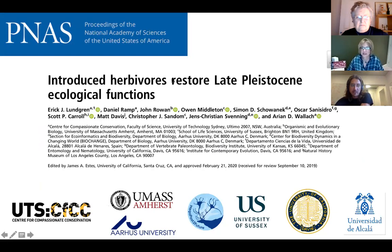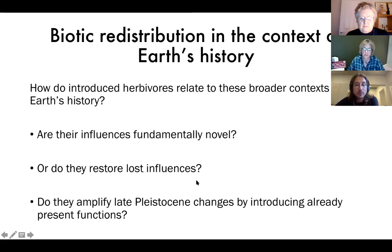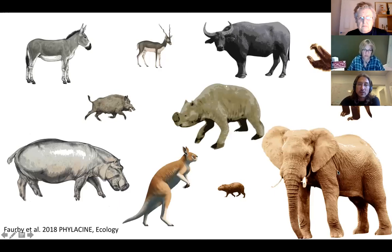This is a paper I worked on a couple of years ago, published in PNAS, one of the foremost scientific journals in the world. We wanted to know how to understand these introduced organisms — these big animals — in the context of Earth's history. Given that the Earth for about 35 million years was dominated by big animals, how do we understand these introduced ones? Are they fundamentally novel? Do they have traits that make them incompatible with modern ecosystems? Or are they potentially restoring lost processes and influences?